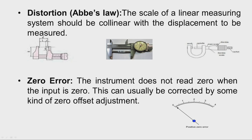With a Vernier caliper, the workpiece is kept between the two jaws, and when we apply pressure there are chances that the jaw may bend, introducing an error component. Distortion can be eliminated by designing the instrument such that the axis of the workpiece coincides with the axis of the instrument.